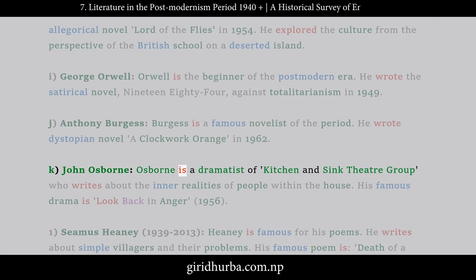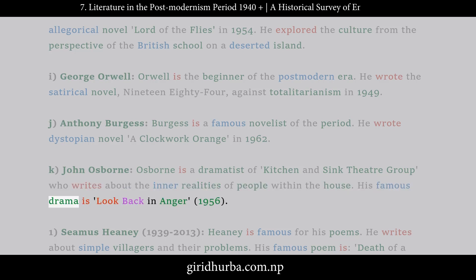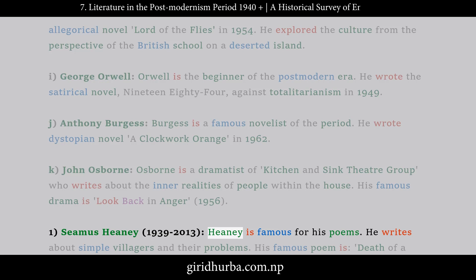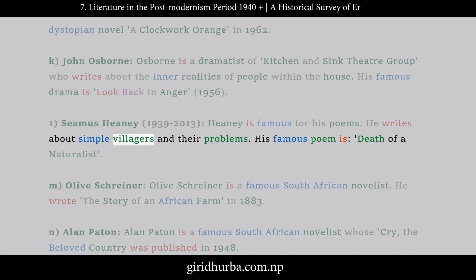K. John Osborne: Osborne is a dramatist of the kitchen sink theater group who writes about the inner realities of people within the house. His famous drama is Look Back in Anger (1956). L. Seamus Heaney (1939–2013): Heaney is famous for his poems. He writes about simple villagers and their problems. His famous poem is Death of a Naturalist.